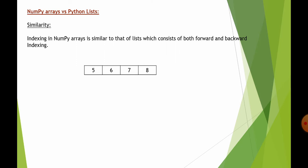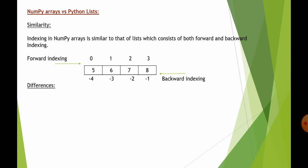Suppose we have an array with the elements 5, 6, 7, and 8. For forward indexing, the direction goes left to right, and for backward indexing, we use negative indexing in the other direction. Now let's have a look at the differences, because indexing is the only similarity between lists and arrays.